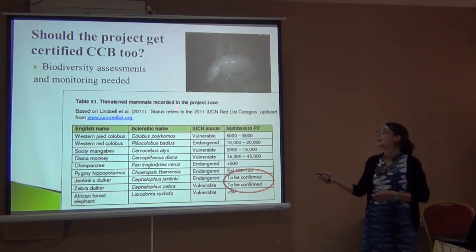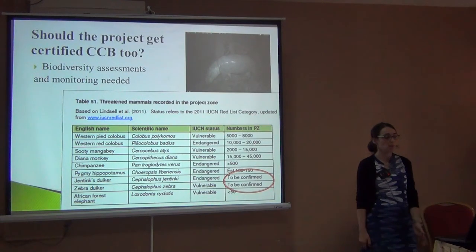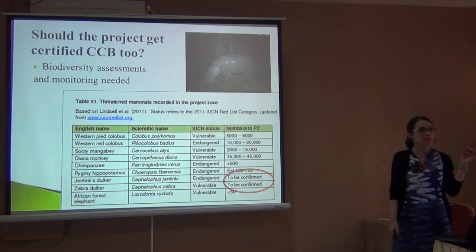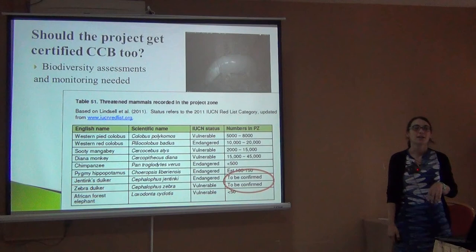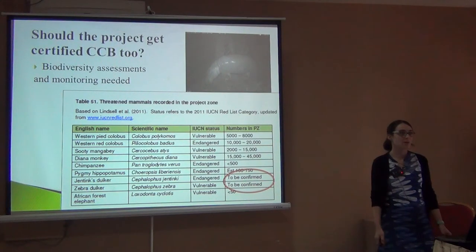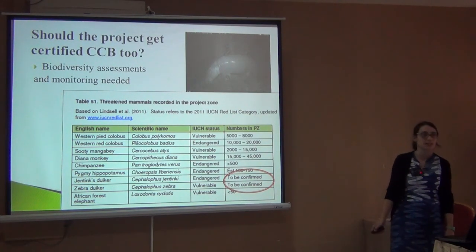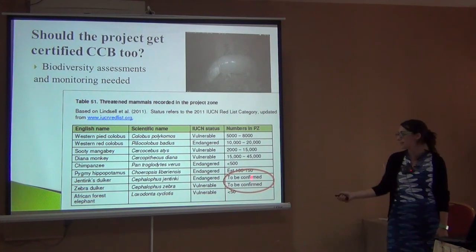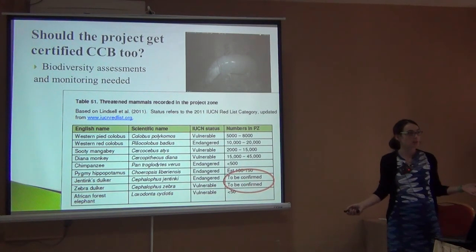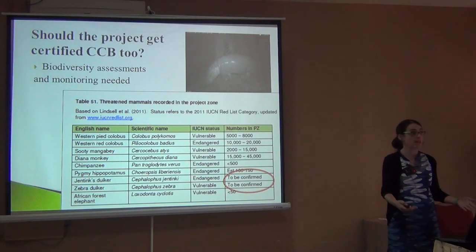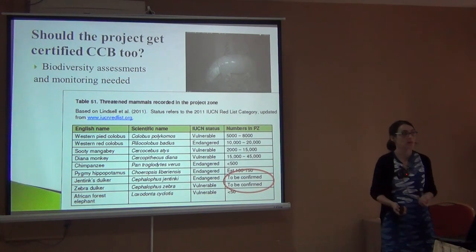Another question was about CCB certification — should we invest in monitoring the special biodiversity we have to get this extra certification, so we can sell carbon credits at $15 instead of $10? In this case it looked like it had huge potential. For example, they have a pygmy hippo — a very cute animal only found in Sierra Leone and Liberia, highly endangered. They have many endangered species, including two that haven't been seen for more than 10 years. If we want to get certified for helping biodiversity, we need to know what we have — so we need to invest in a survey and then in monitoring. In this case, they had so much that it was worth the investment.